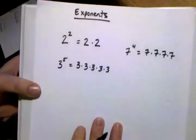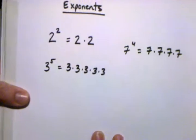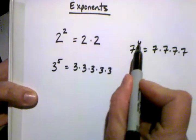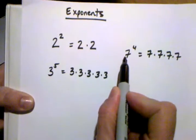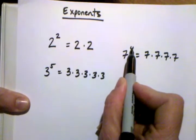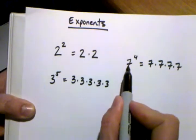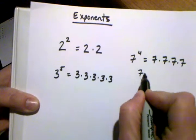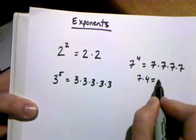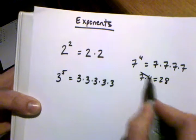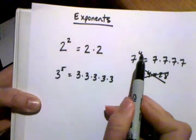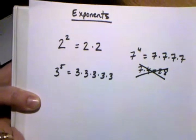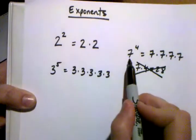One confusion that a lot of students have is that they see this number, and they see this number, and they know they have to multiply something, and what they end up doing is multiplying that exponent times the base, and they do this, and they tell me the answer is 28. But this is absolutely wrong. That's not what that notation means. This is just a really kind of short way to write out a very long problem.